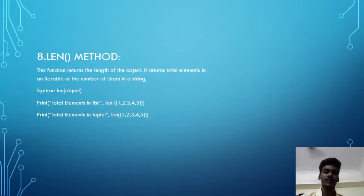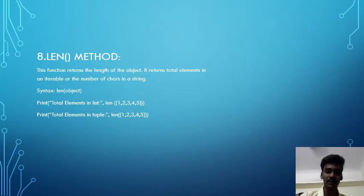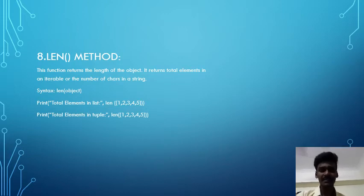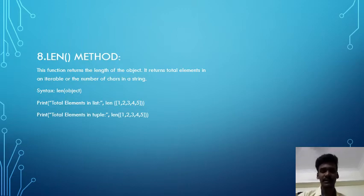The eighth one is len() method. This function returns the length of the object. It returns the total number of elements in an iterable or the number of characters in a string. The syntax is len(object), and the example is given below, such as: print('total elements in the list:', len([1, 2, 3, 4, 5])).